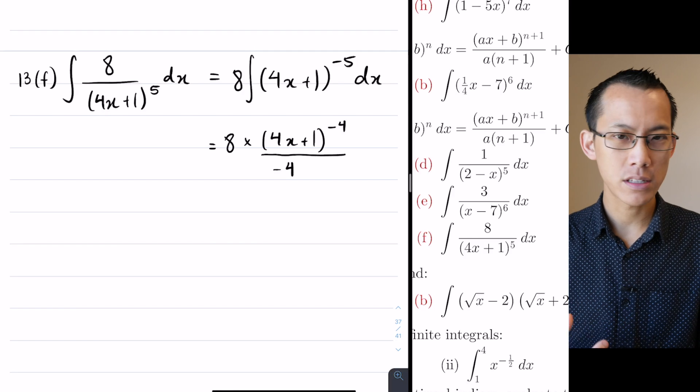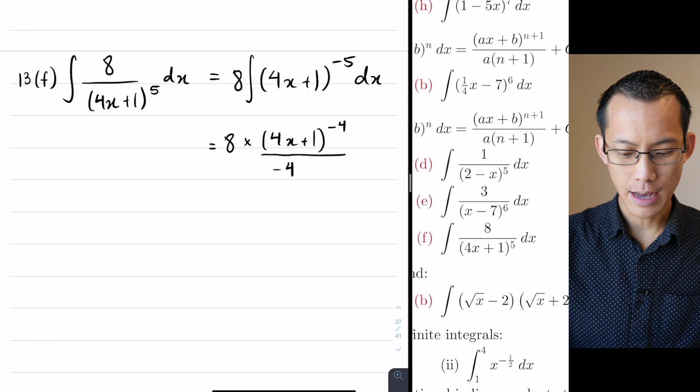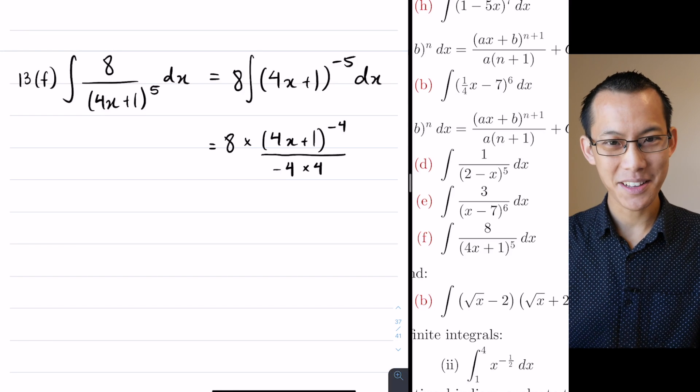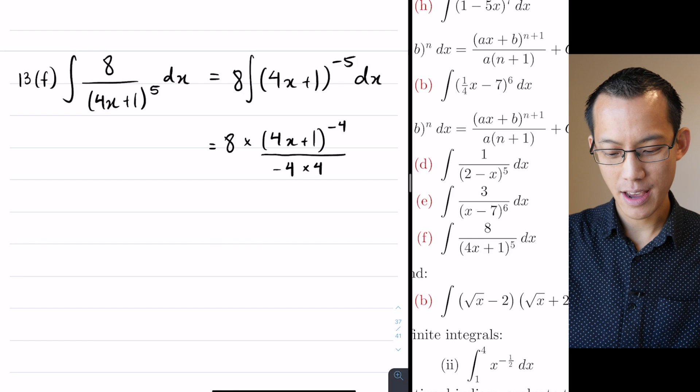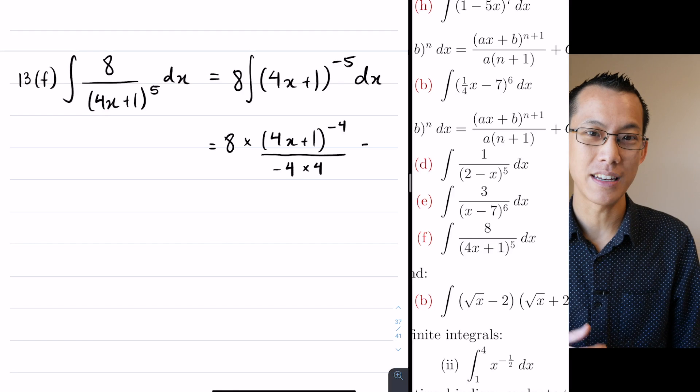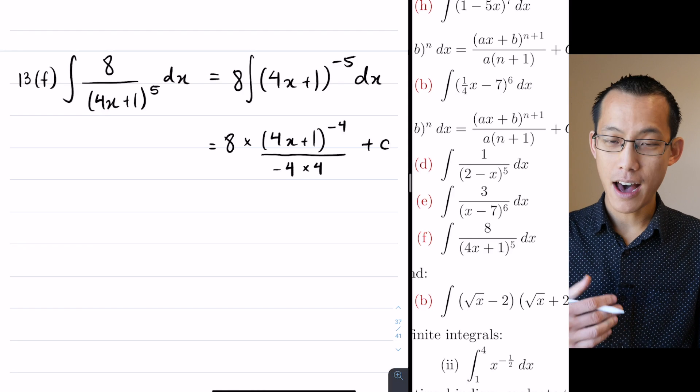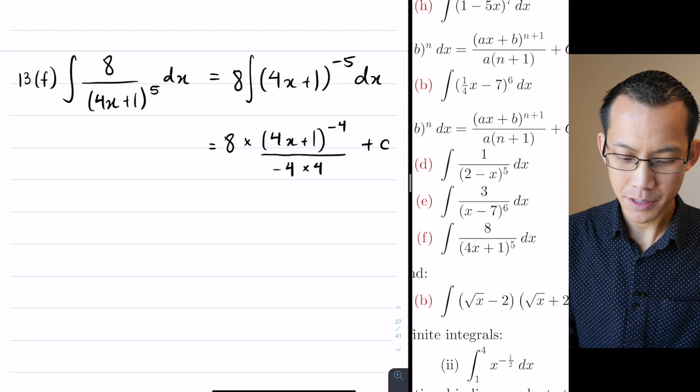What's left? Well, I've got to deal with the inside as well. 4x + 1, what is the derivative that you have there? It's going to be 4, right? So I've dealt with the outside, now I've dealt with the inside, and then I add c because it's an indefinite integral.